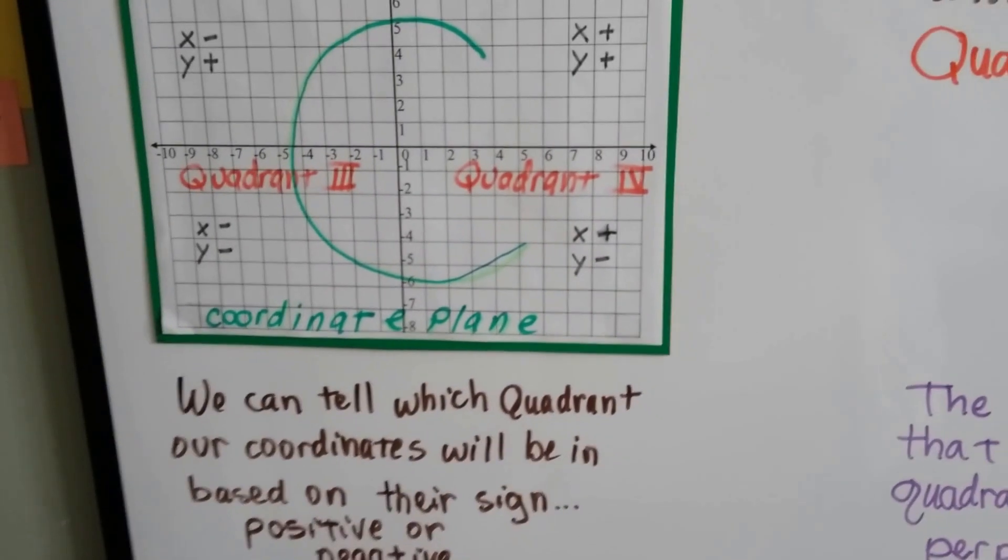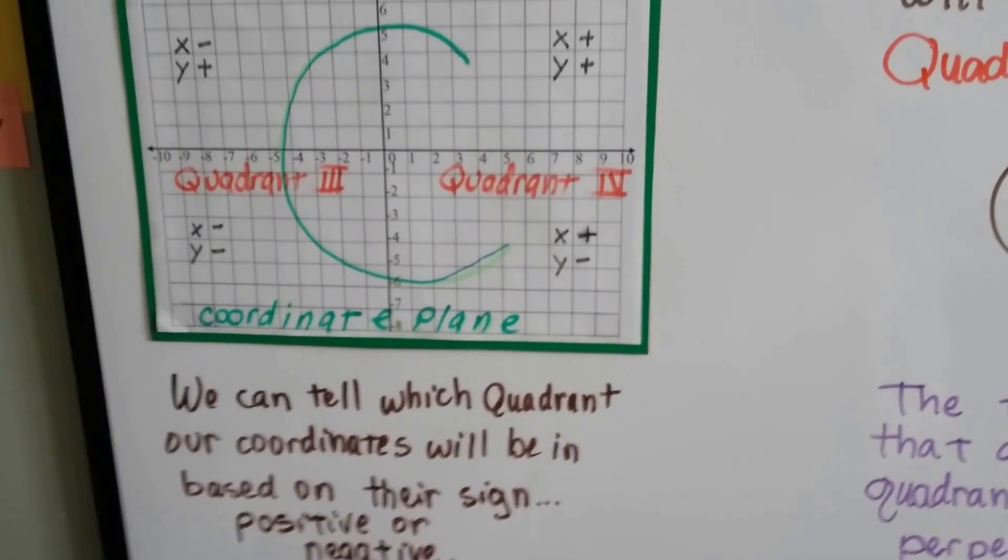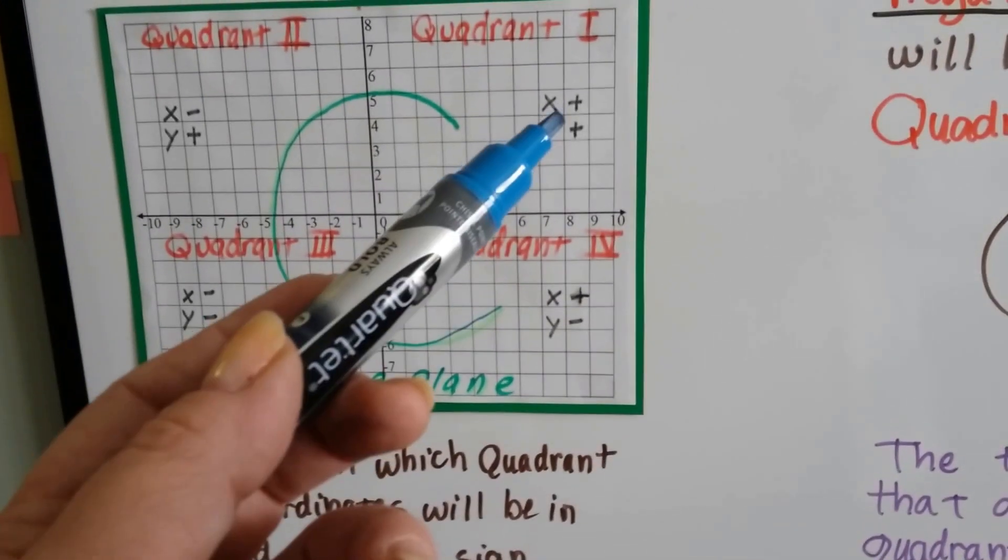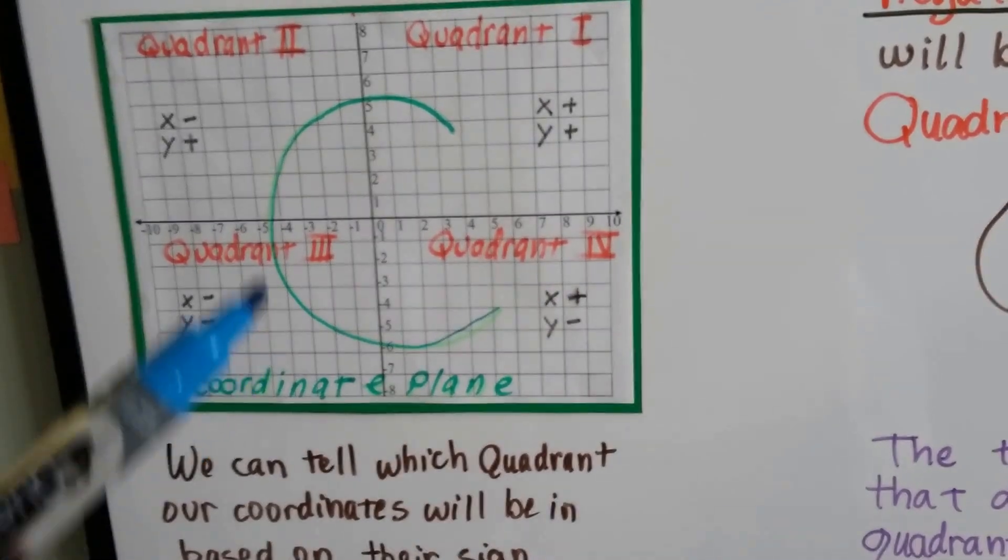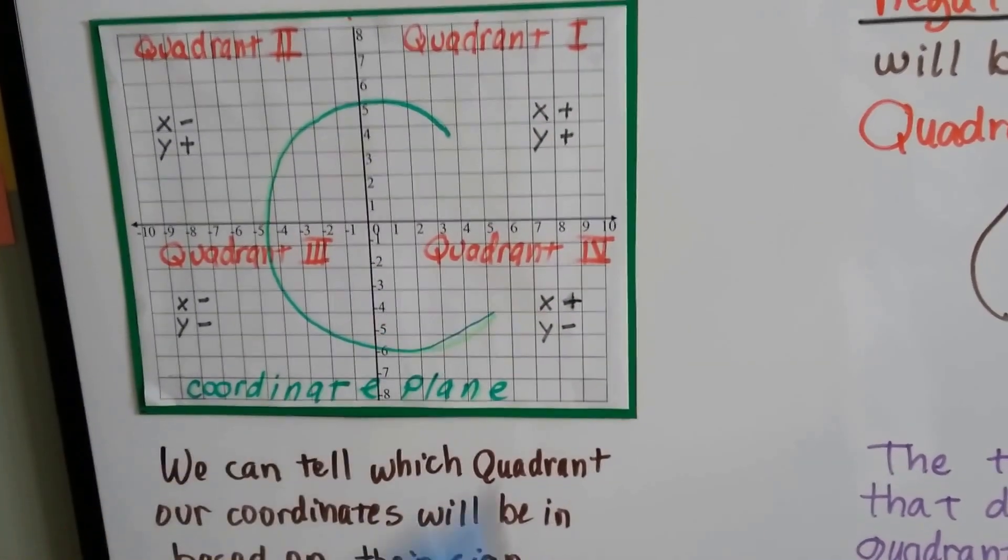And we can tell which quadrant our coordinates will be in based on their sign, positive or negative. See? Two positives, two negatives. Negative positive, positive negative.